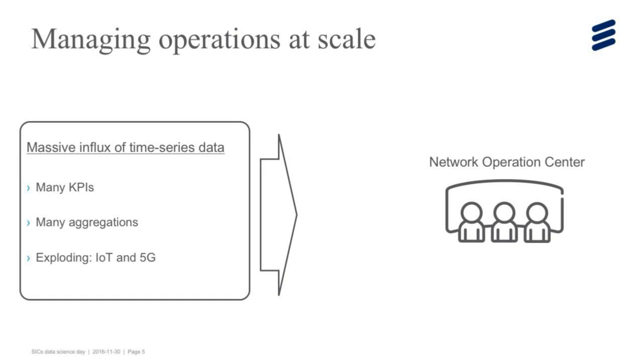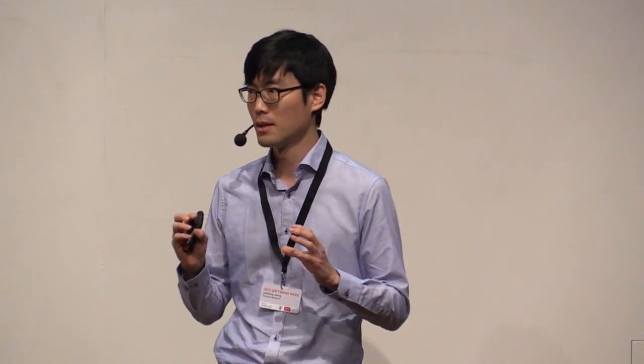But this data actually generates a massive influx of time series data stream towards network cooperation center. This massive amount of data is generated due to a number of KPIs like trigger types, traffic volumes, number of users, or channel quality. And also this is generated by levels of aggregation like per cell time series, per user time series, per application time series. This kind of diversity will explode as IoT and 5G comes. And this amount of data cannot be handled by engineers sitting in network cooperation center, and this is why real-time anomaly detection is very important in the perspective of scalable operations.